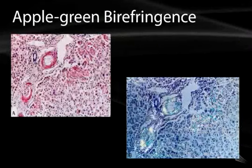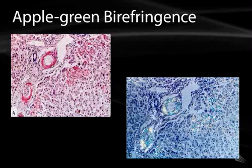The H&E slide demonstrates the pink, red-pink deposition of amyloid around the blood vessels in this picture from the kidney. When the same slide is viewed under polarized microscopy, you see what we term the apple green birefringence of the amyloid deposited around the blood vessels and also within the extracellular space around some of the surrounding cells.